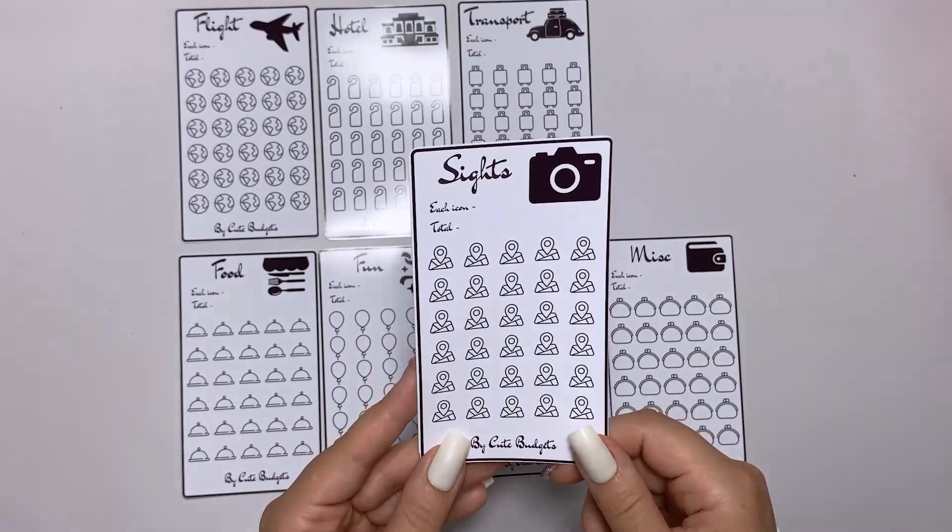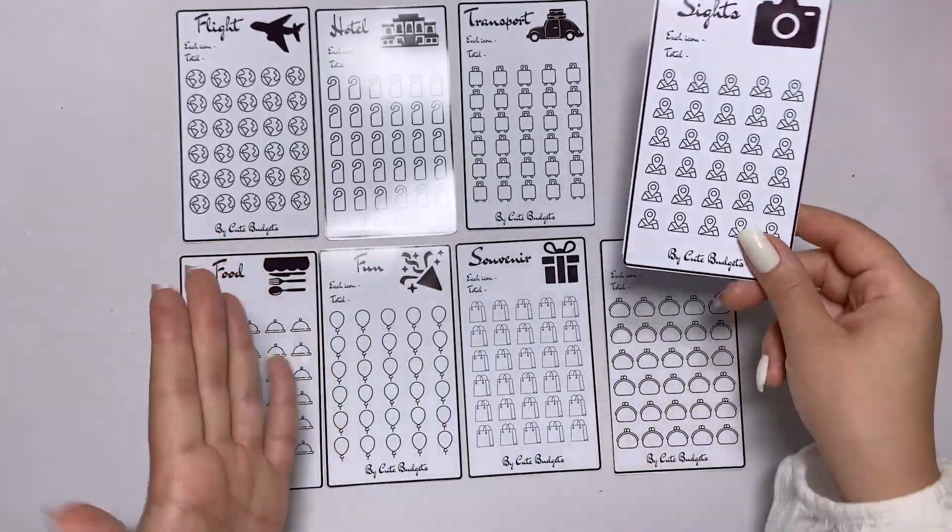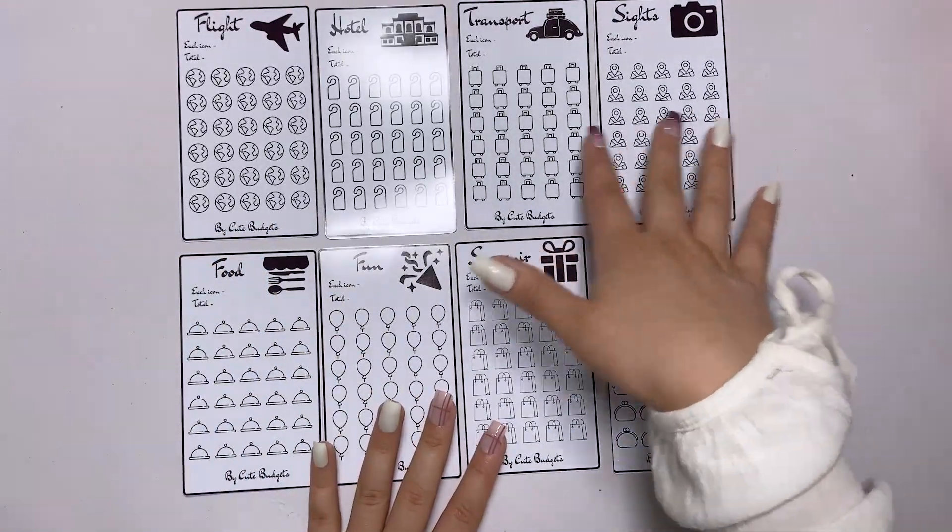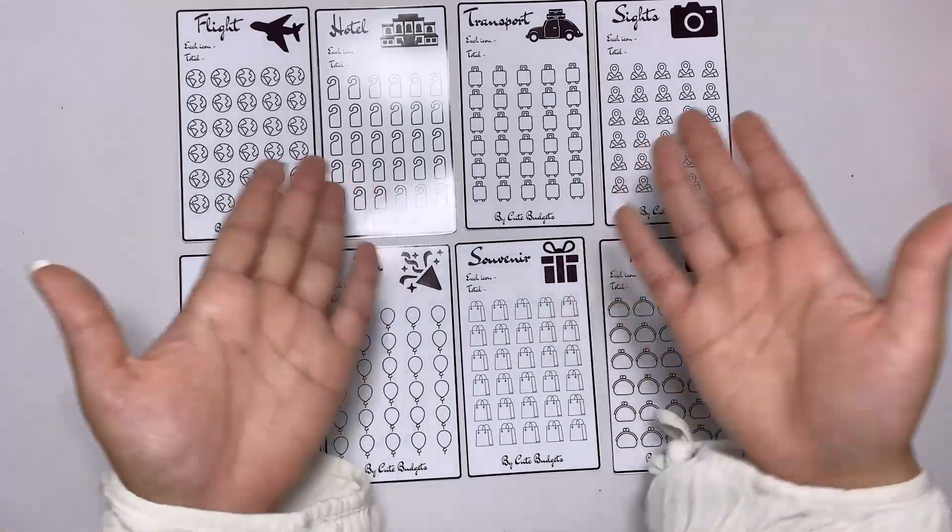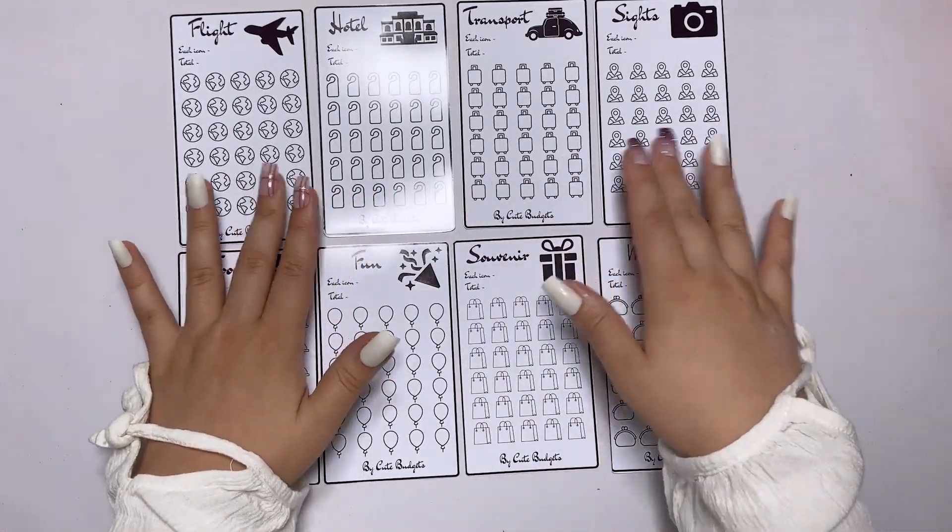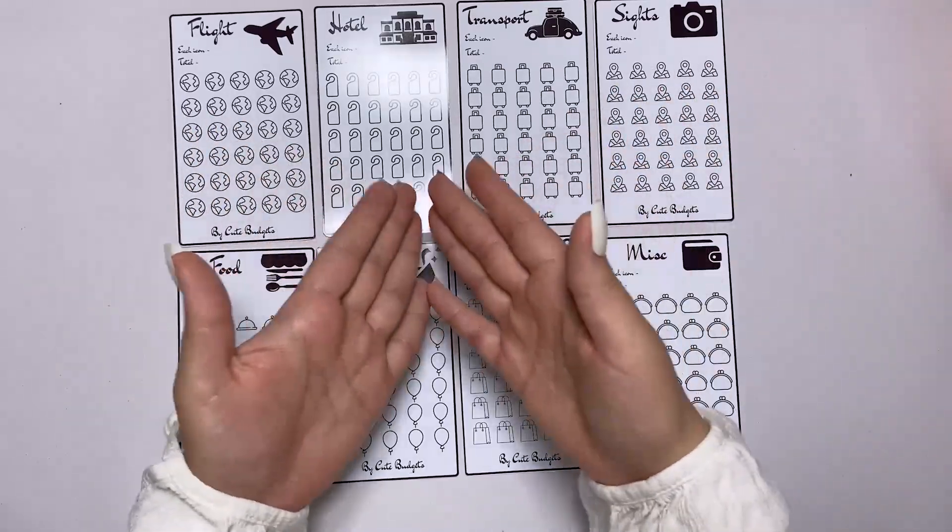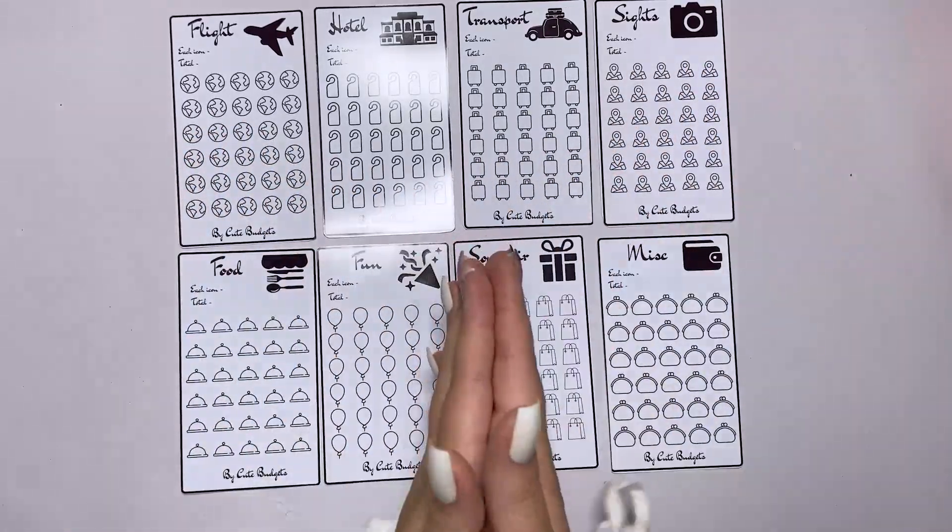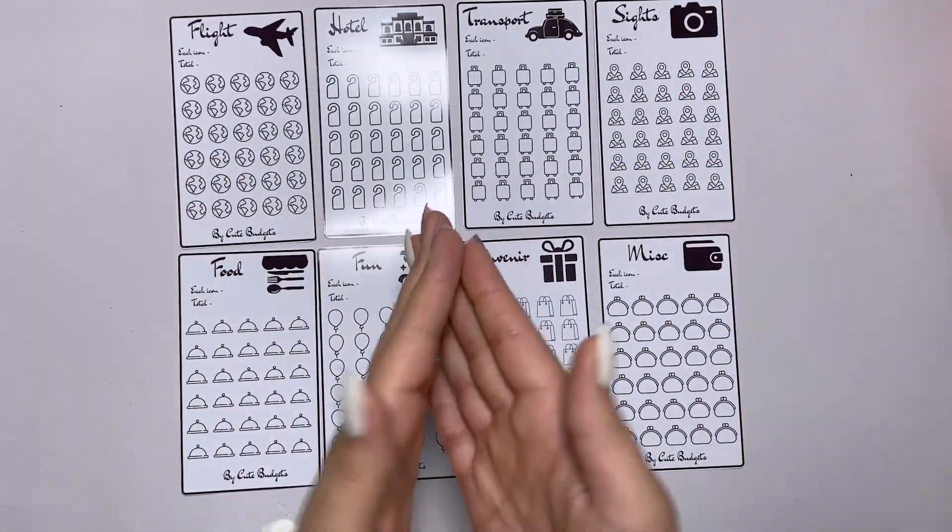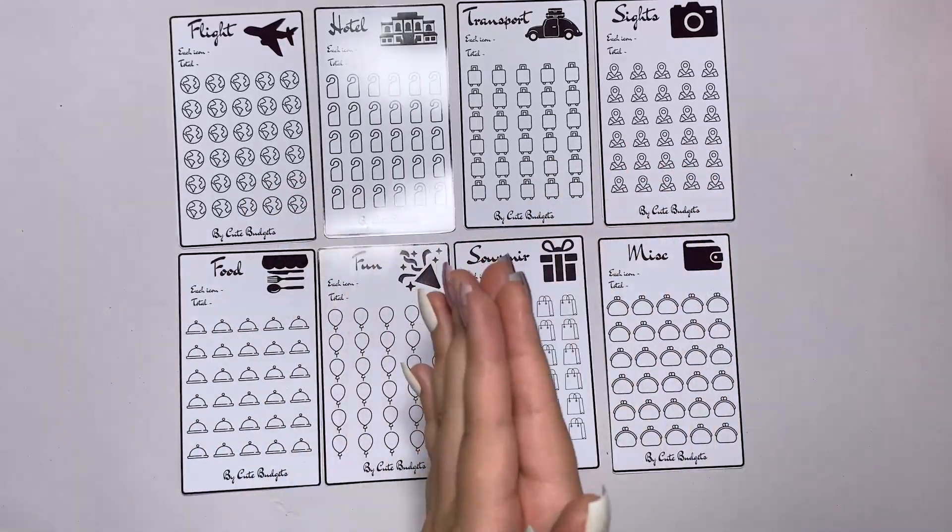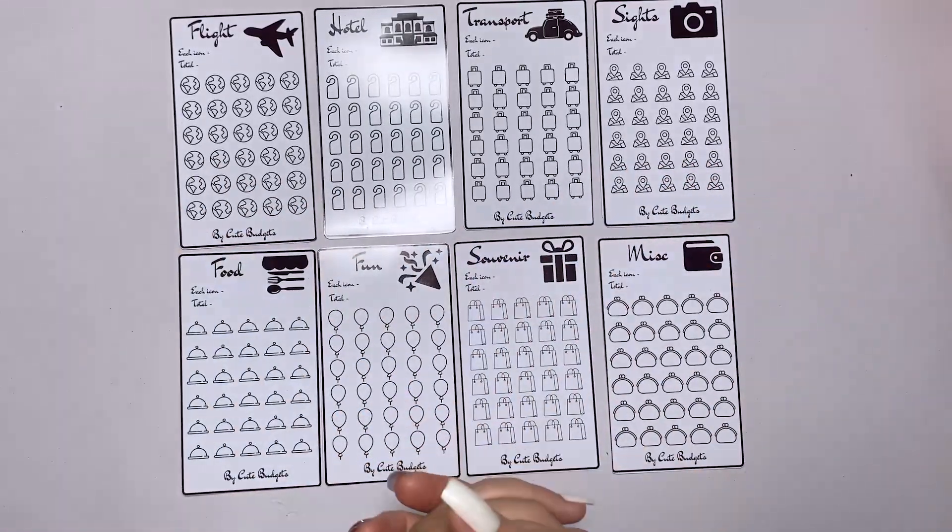This is good because you can save money during 30 weeks, because each icon equals...there is 30 icons for each savings, so you can save money for vacation in 30 weeks.